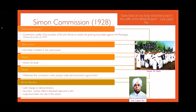Next, the Simon Commission. This was a commission under the chairmanship of Sir John Simon, appointed to address growing discontent against the Montague-Chelmsford Act of 1919. Indians protested because there were no Indian members in the commission, and the slogan used was 'Simon Go Back.' Whenever the commission went anywhere, people made demonstrations and faced lathi charges. Police officer Saunders attacked Lala Lajpat Rai with a lathi, and Lala Ji died within days. He famously declared: 'Every blow on my body will prove a nail in the coffin of the British Empire.'